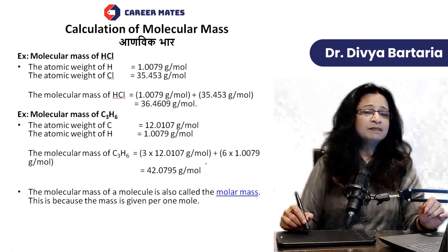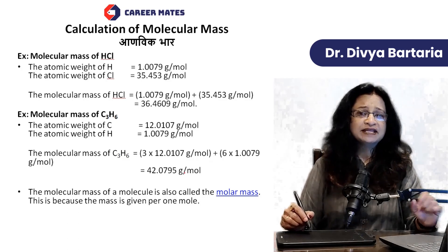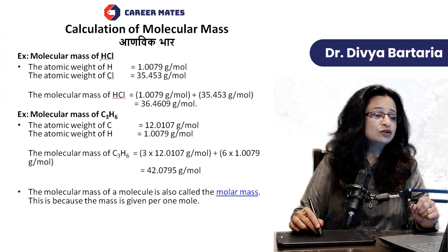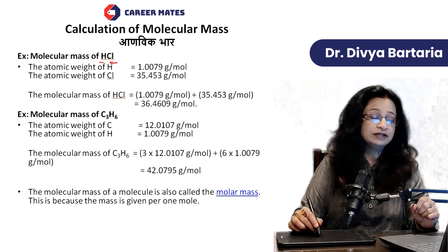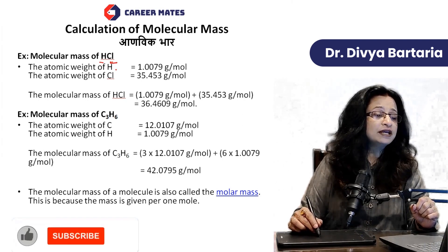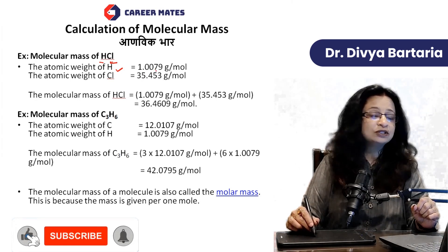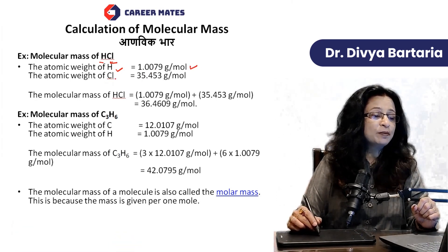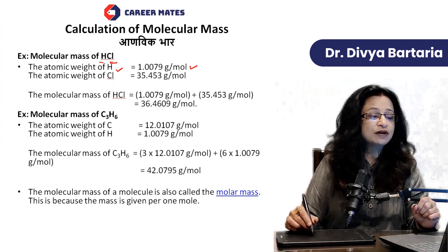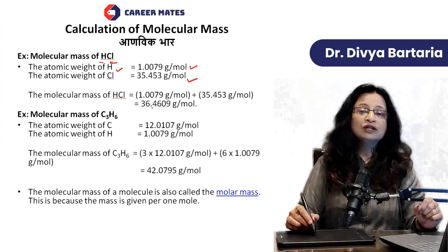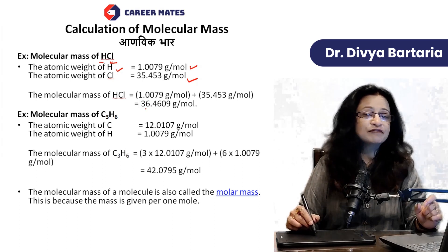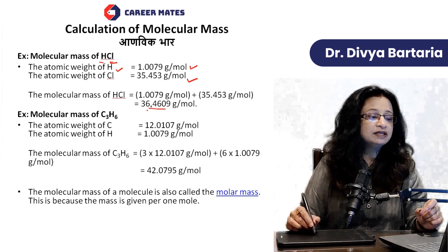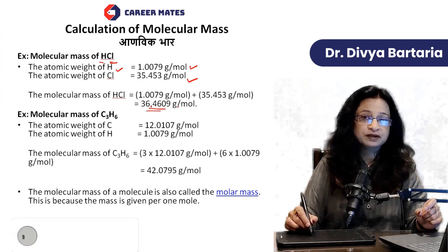Let's see how it is. Look at the molecular mass of HCl. If we talk about HCl, one atom is hydrogen and the other atom is chlorine. The atomic weight of hydrogen is 1.0079 grams per mole. Similarly, the atomic weight of chlorine is 35.453 grams per mole. So the molecular mass of HCl is the summation of these two, giving us the result in gram per mole.